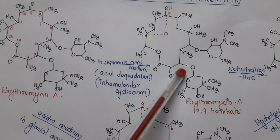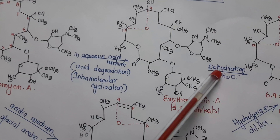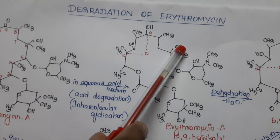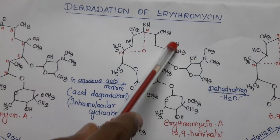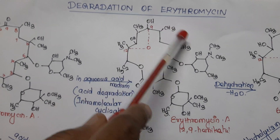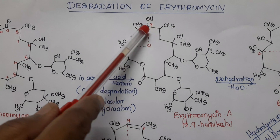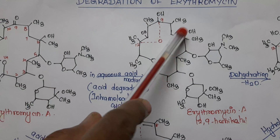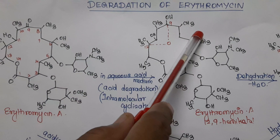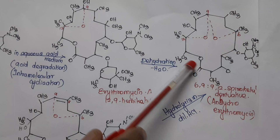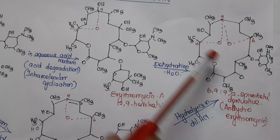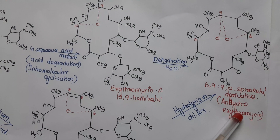This hemi-ketal undergoes further degradation. The OH combines with the hydrogen present at the sixth portion hydroxy group, resulting in removal of one molecule of water. To satisfy the valency of carbons at positions nine and six, they are connected by means of oxygen, giving a spiro-ketal derivative. The name is 6-9-9-12 spiro-ketal derivative, otherwise called anhydromycin.